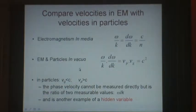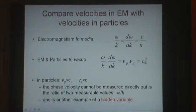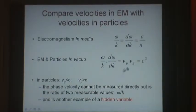But for particles in vacuo, we have the phase velocity times the group velocity equals c squared. Now we know from special relativity that the group velocity, the velocity that we measure in the lab and that we're familiar with, must be less than c. This implies that the phase velocity must be more than c. The phase velocity cannot be measured directly, but it is the ratio of two measurable values, omega divided by k. So it's another example of a hidden variable.